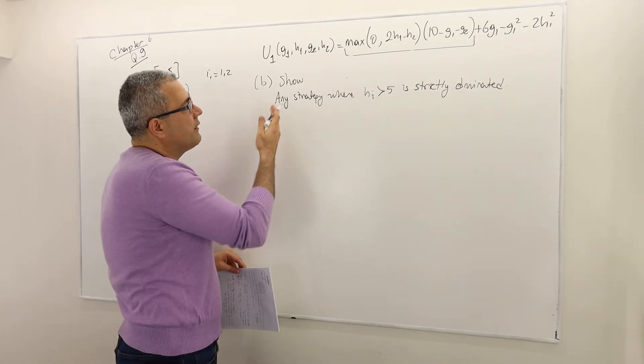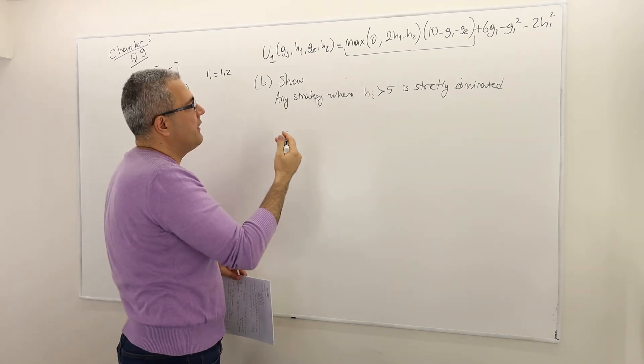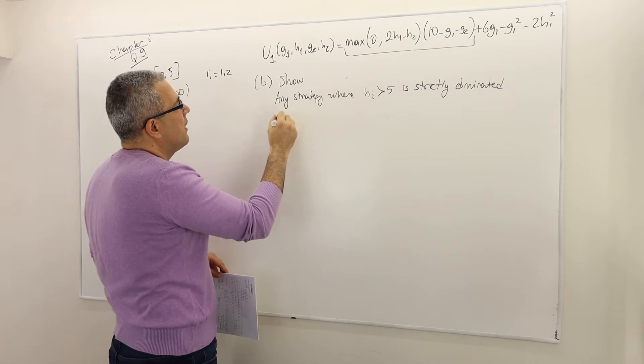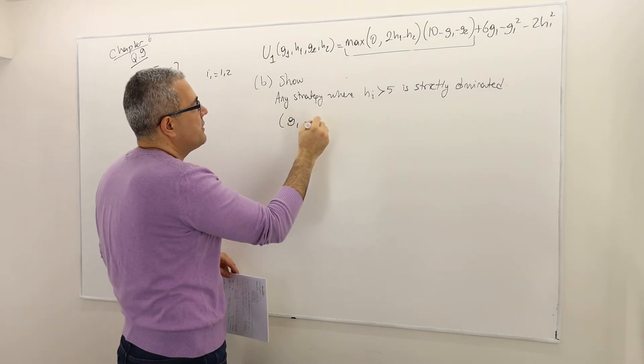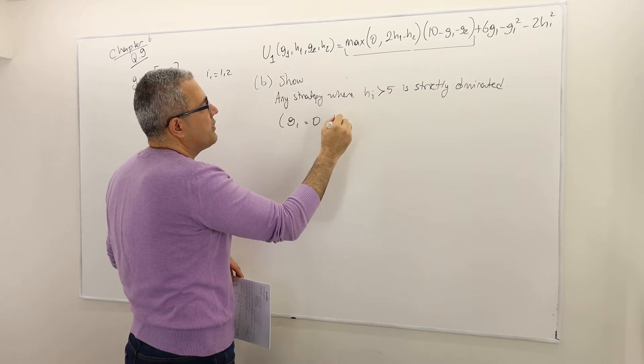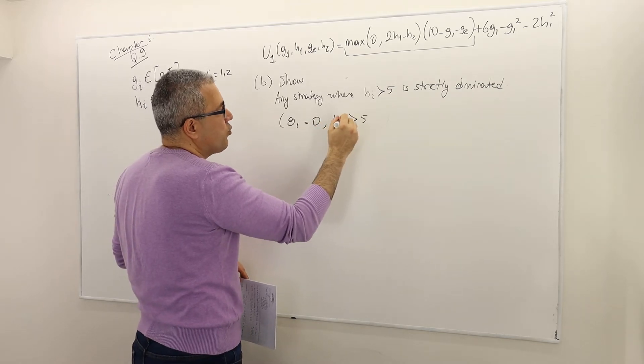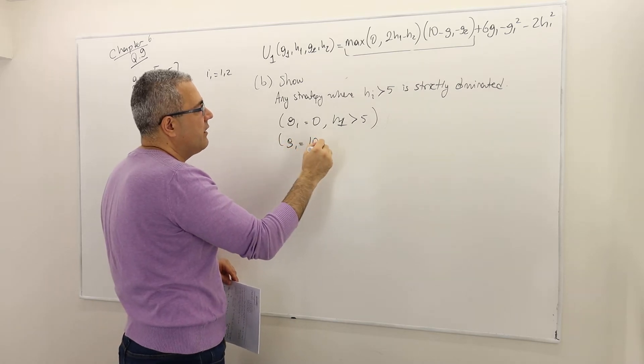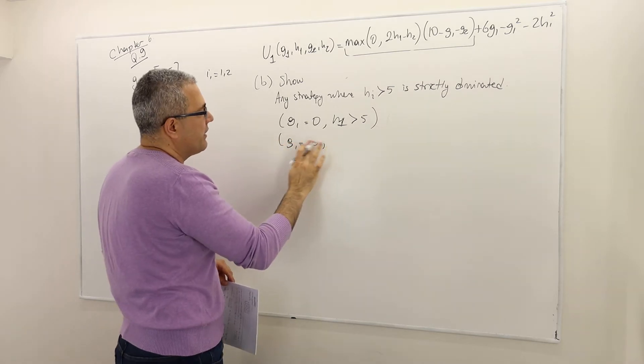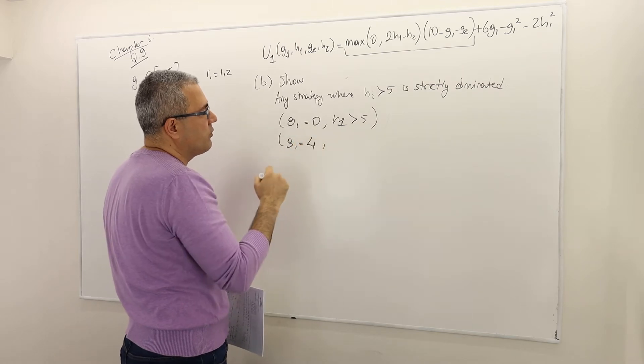So here, that statement, that argument basically says, for example, G1 equals zero, but then H1 greater than 5 is strictly dominated. G1 equals 10, well, G1 cannot be greater than 5, sorry, so G1 equals 4.